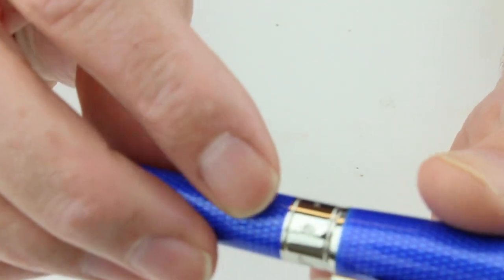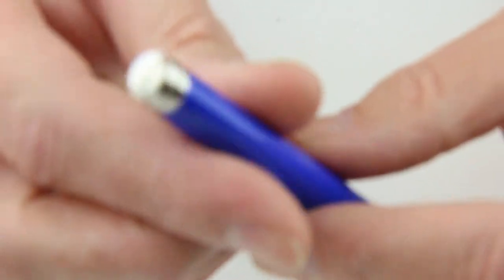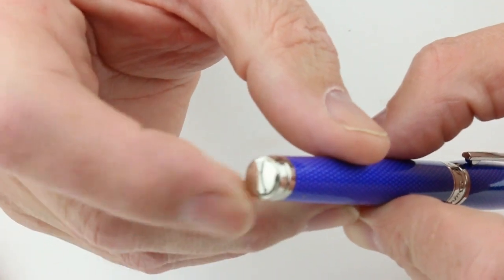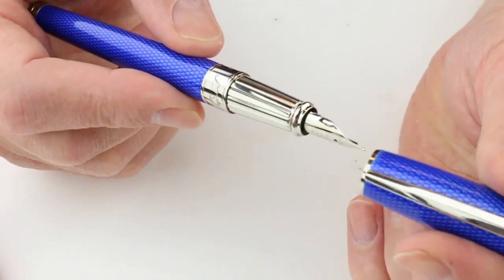It has the Estee DuPont engraved around the middle section here, the middle ring of the pen, and just a plain ring at the bottom of the barrel. It has a snap on and off cap.